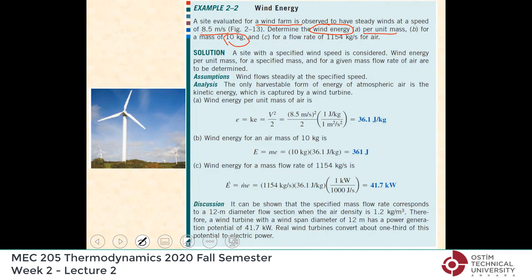The first thing we do is calculate the kinetic energy of air, which is V-squared over two. The unit m²/s² corresponds to J/kg after the appropriate conversion.